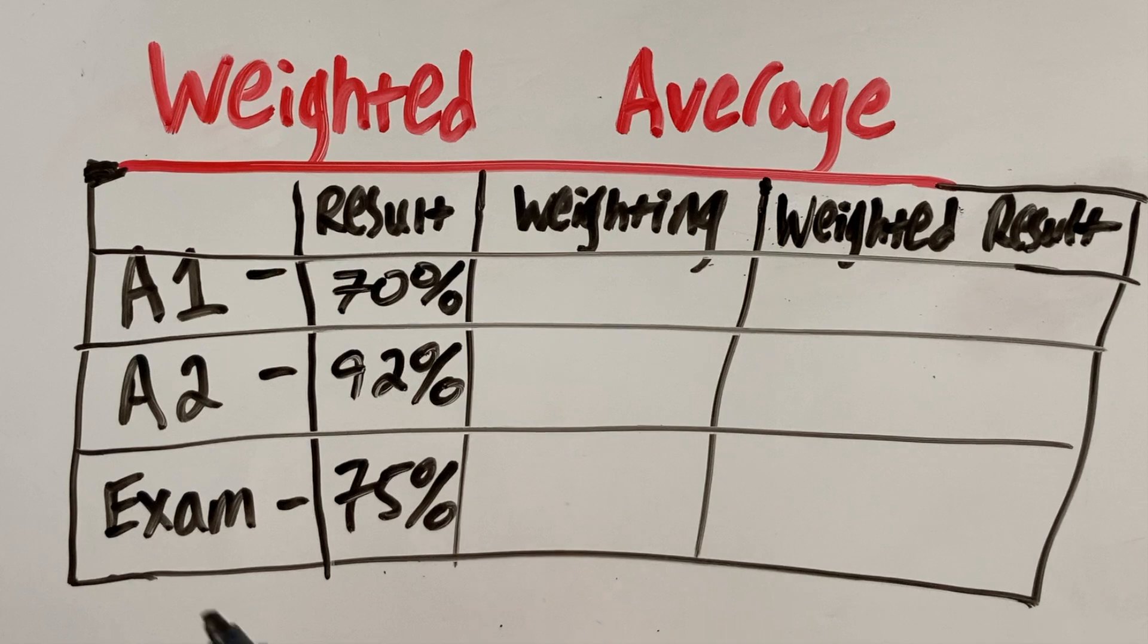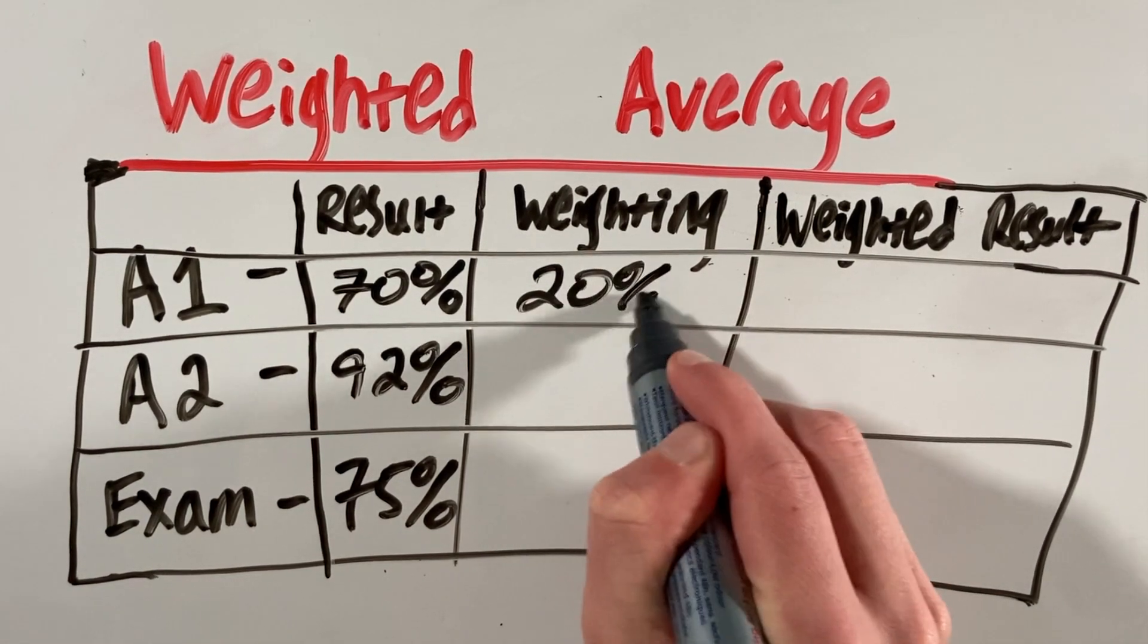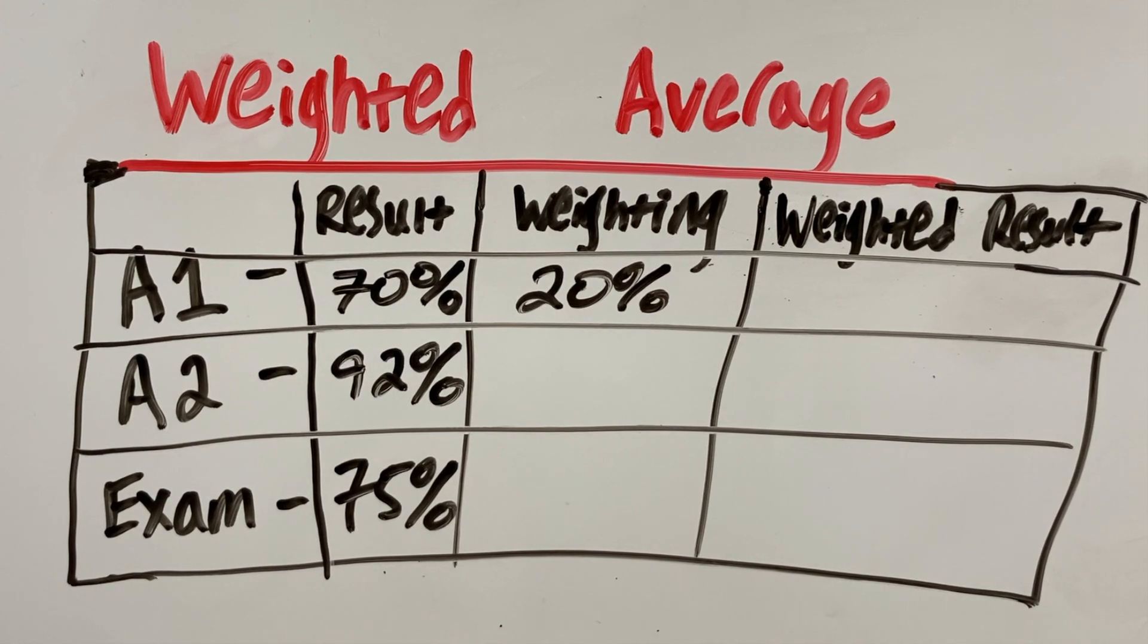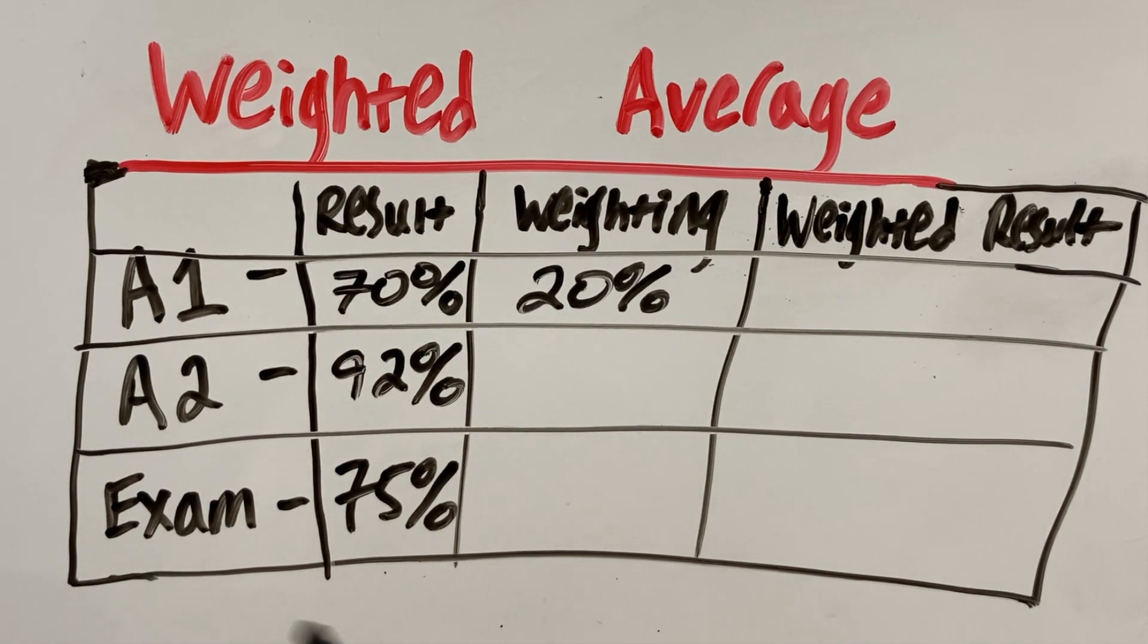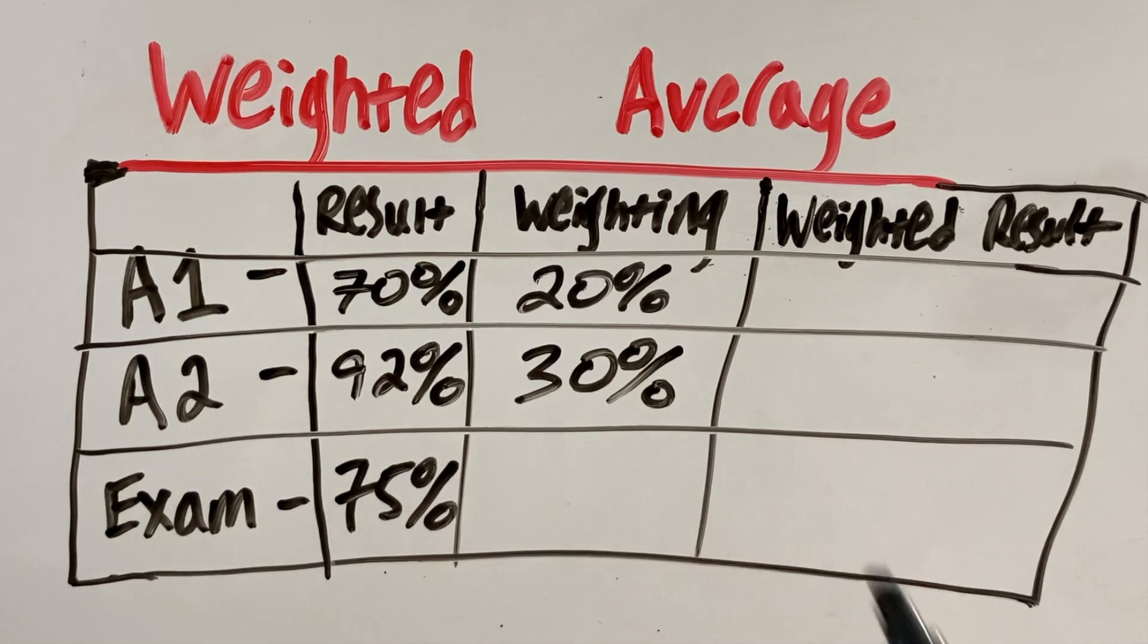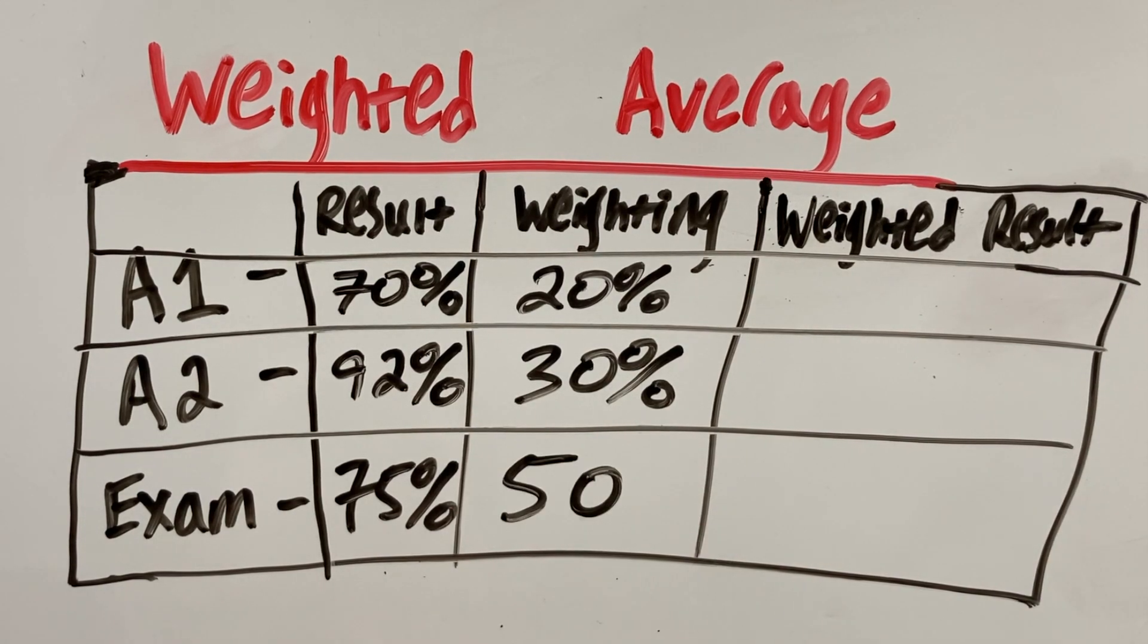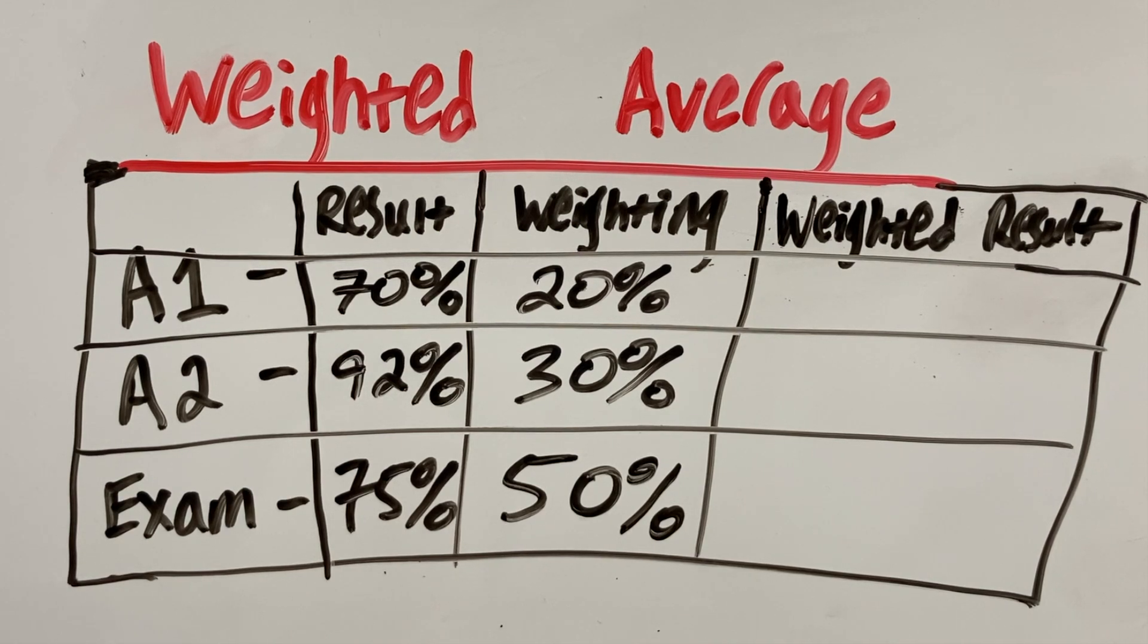So let's say that our first assignment was worth 20% of our overall grade—in other words, our weighted average. Let's say assignment 2 was worth 30% of our weighted average, meaning that the exam is worth 50% of our weighted average.